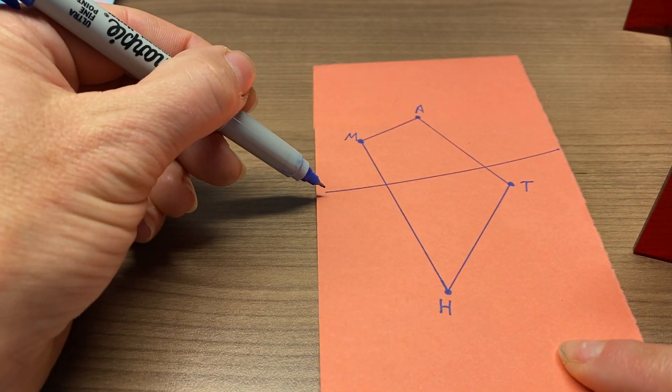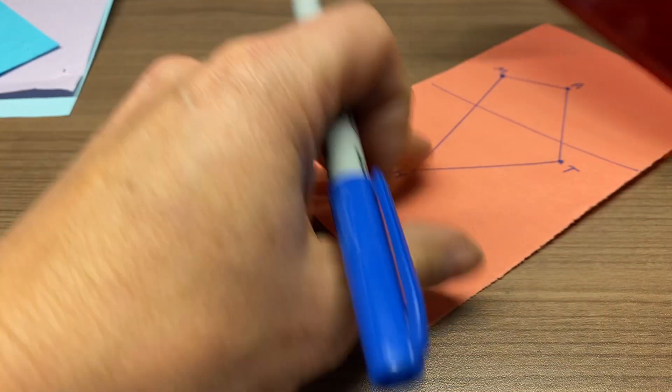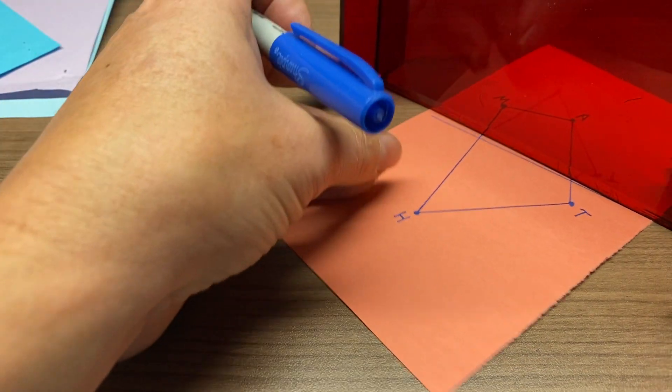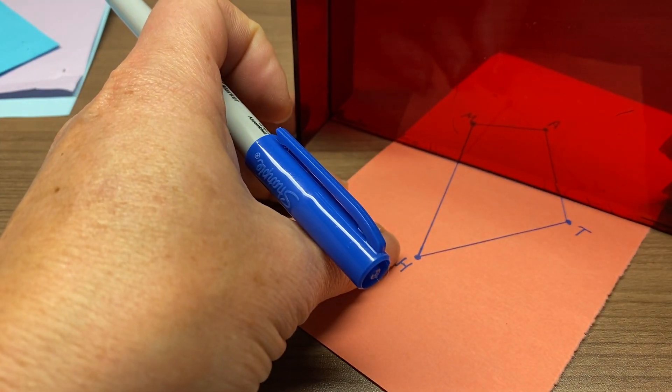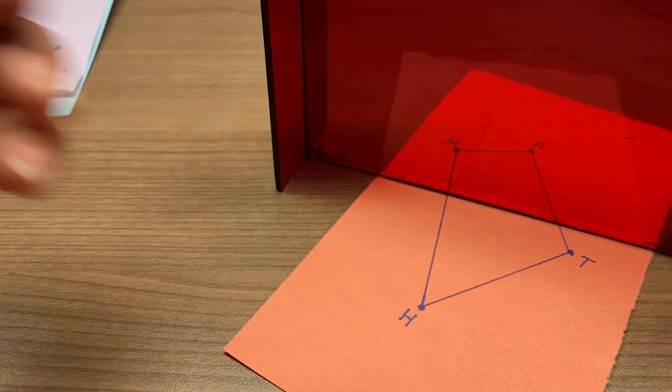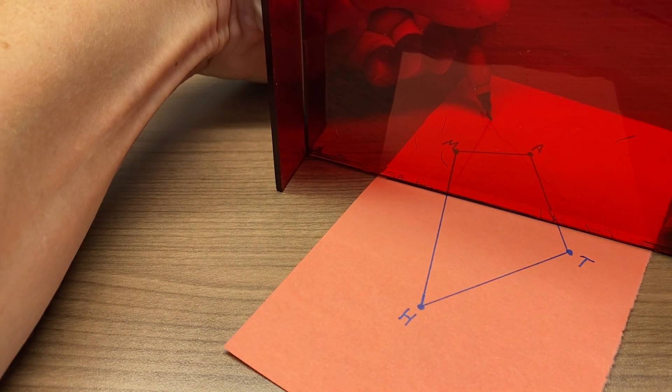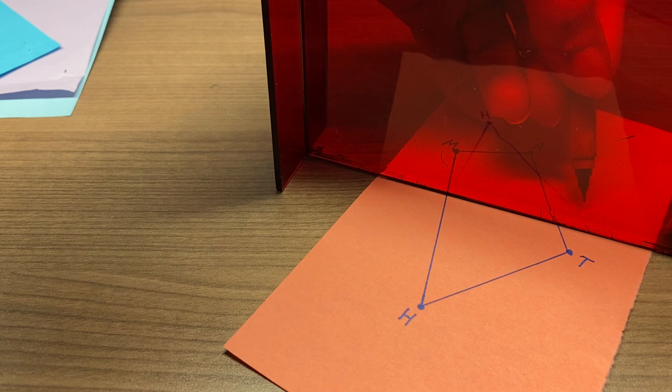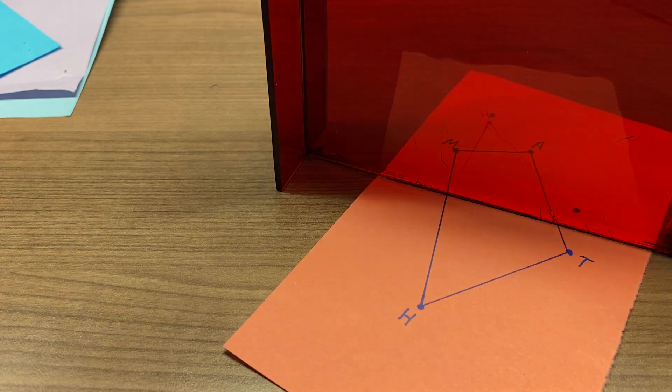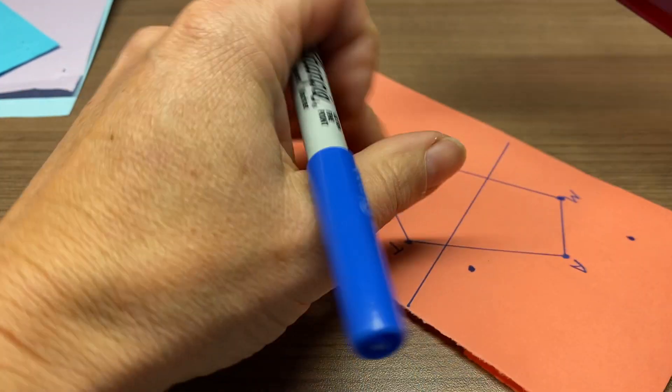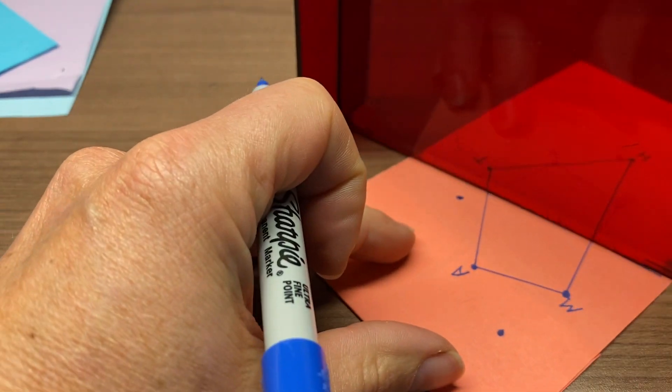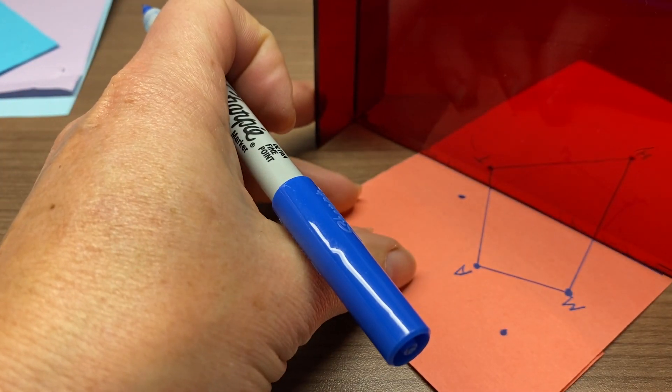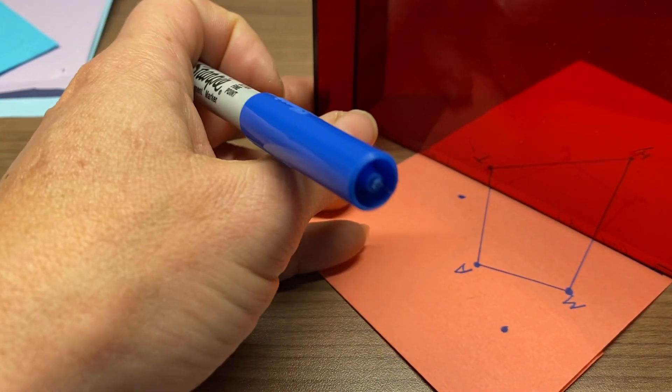Now, you can also do this if your reflection line happens to run right through your figure. So the way we do that is you put your mirror board, again, on the reflection line, spot where those points that are on your side are going, and mark those. Then flip it around and do the reflection from the other direction to find the other two.